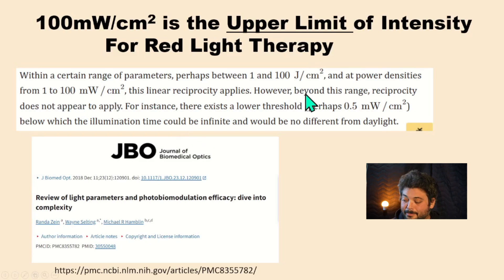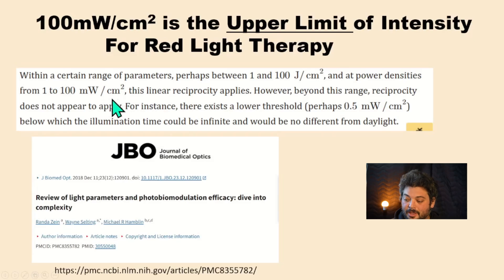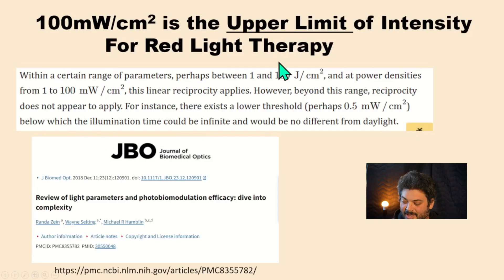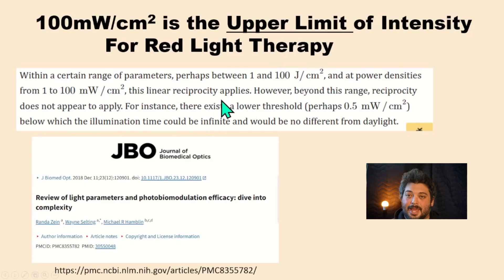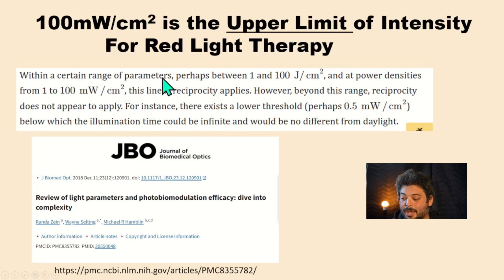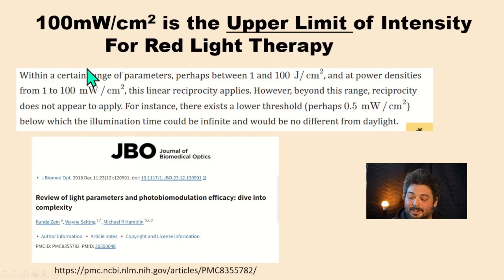Generally, that may be true within the ranges of 1 to 100 joules per centimeter squared and 1 to 100 milliwatts per centimeter squared — you could expect some general linear reciprocity. However, above 100 milliwatts per centimeter squared and/or above 100 joules per centimeter squared, your linear equations do not apply. So if you use a dosing calculator with super high intensity, that might not be a good way to estimate your dose anymore, because you've gone beyond the general range where those equations apply.